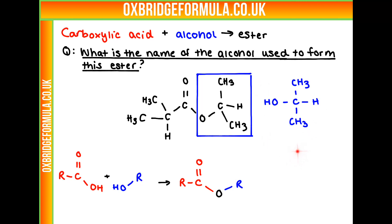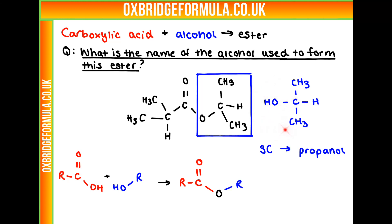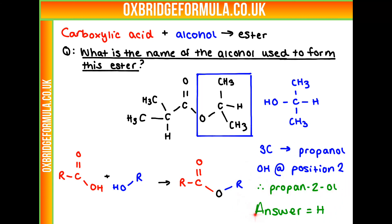So now let's name the alcohol. The first step in all naming processes is to find the longest carbon chain. We can see we've got a carbon chain of length three here — three carbons means it's a propanol. But we also need to think about where our alcohol group is, where this OH is. It's on the second carbon, so that must mean it's at position two. It is propan-2-ol. That's our final answer, which corresponds to answer H.